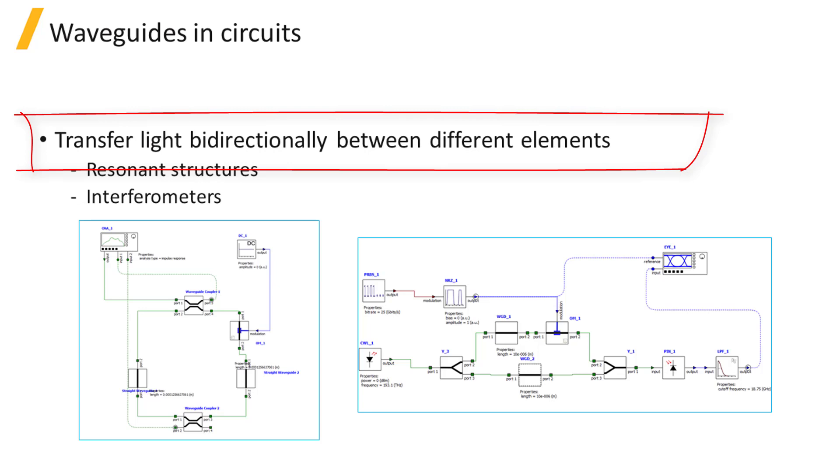Waveguides can be used to transfer light bidirectionally between different circuit elements, and they are commonly used together with waveguide coupler elements to interfere multiple optical signals, for example in resonance structures and interferometers.